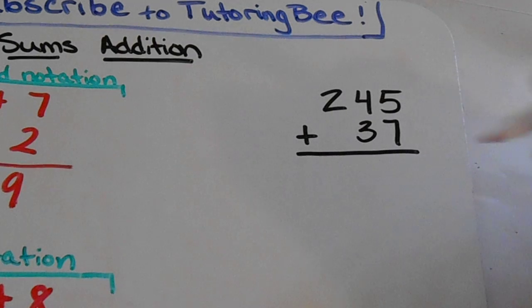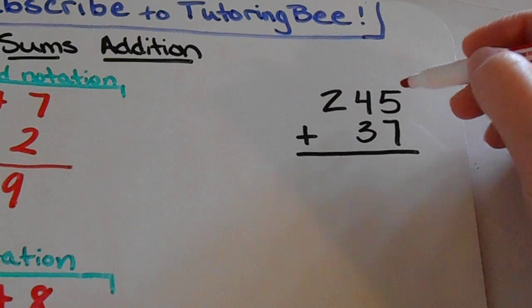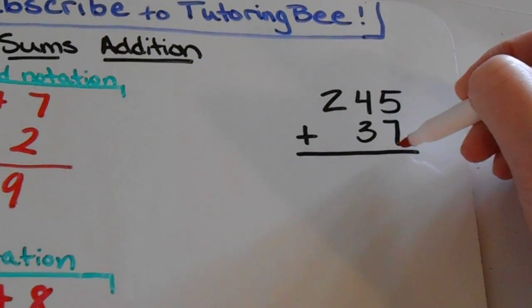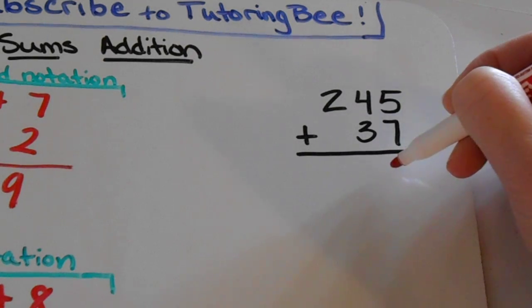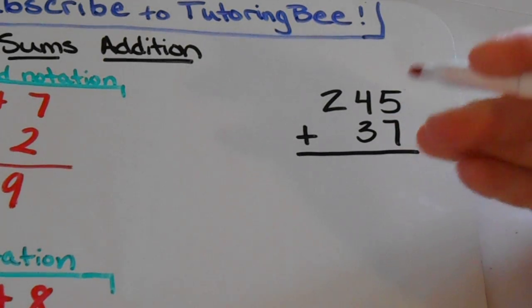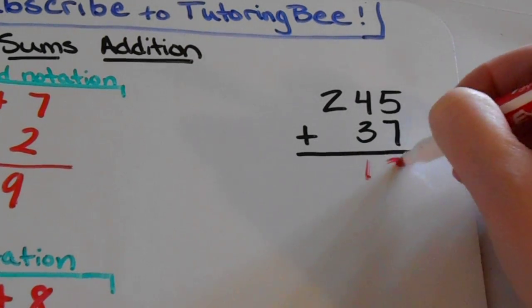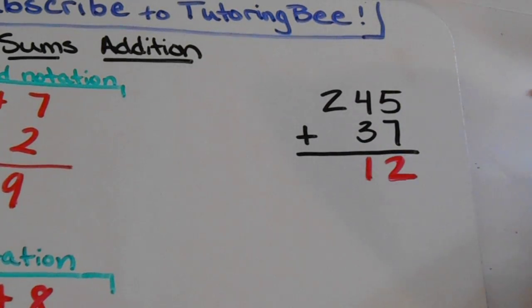So with this problem, I'm not going to write out all of the expanded notation like I did in the other problems. I'm simply just going to start with my ones place. And whatever sum I get for each place value, I'm going to put it down here in the bottom, and then I'm going to re-add all of those sums. So for example, 5 plus 7 is 12, and I'm going to write that two-digit number down here at the bottom.